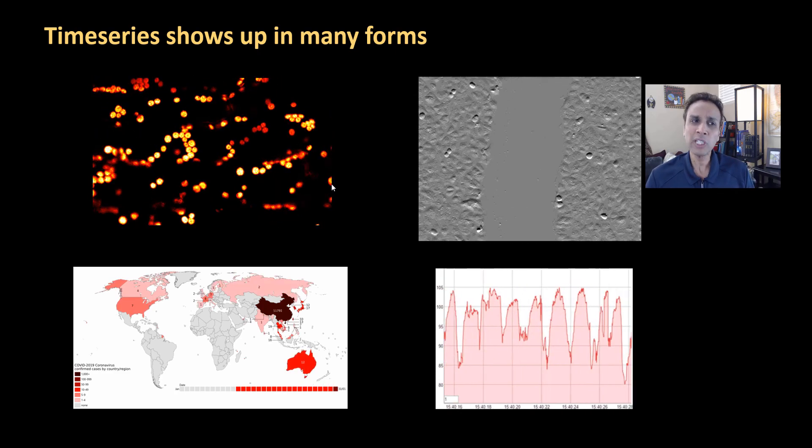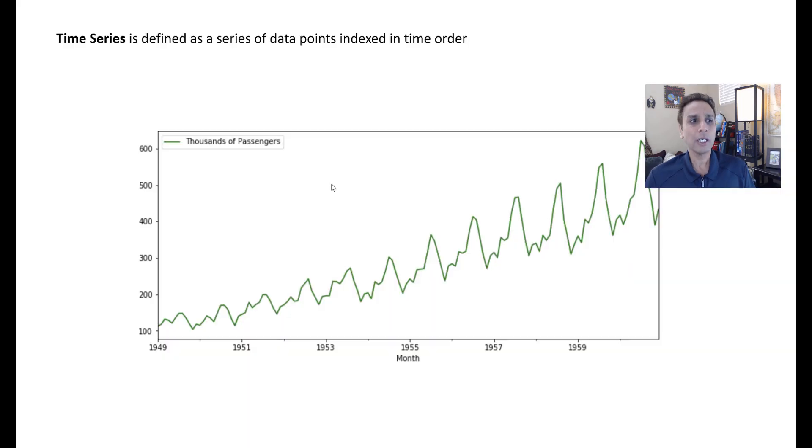Why is time series different? Time series is different from other data we've used in the past because before we looked at a bunch of attributes and tried to predict if something is a cat or a dog. But when it comes to time series, it's just a function of time. The data points are indexed against time, and the time can be year, month, or millisecond.